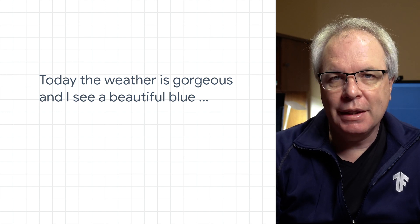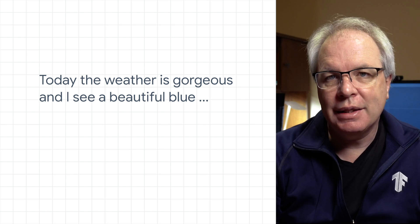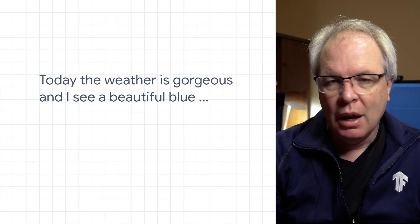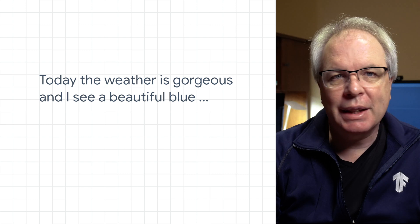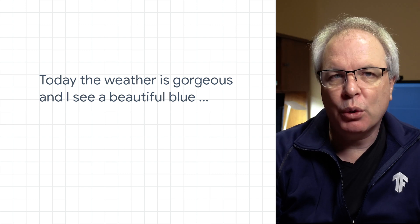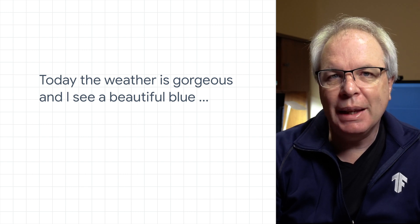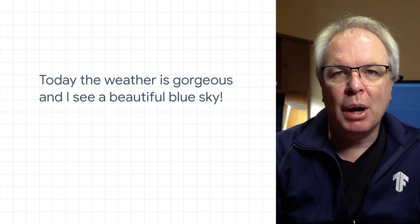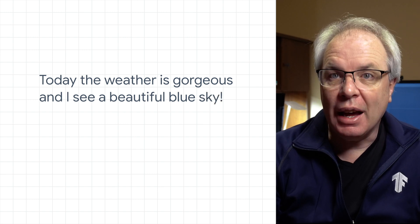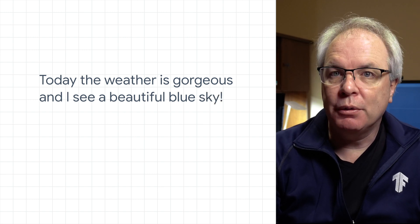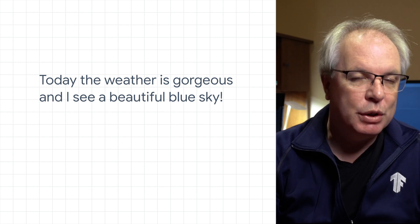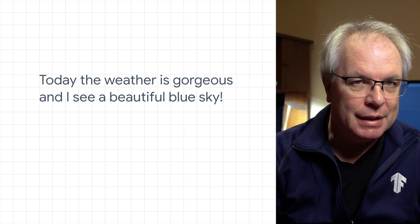For example, consider this sentence: today the weather is gorgeous, and I see a beautiful blue something. If you were trying to predict the next word — and the concept of creating text really boils down to predicting the next word — you'd probably say sky, because that comes after beautiful and blue, and the context is the weather, which we saw earlier in the sentence.